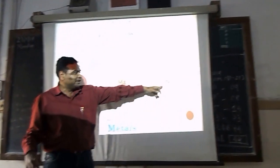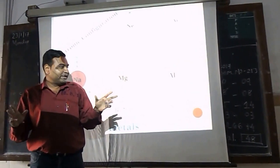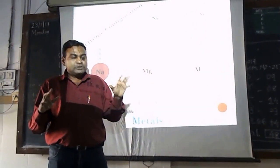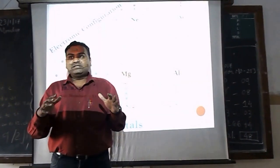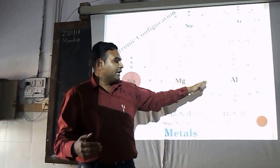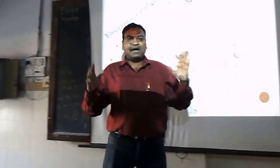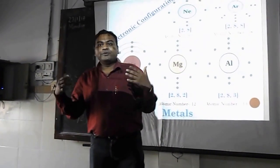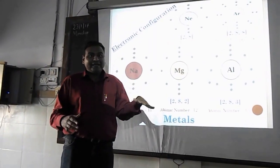A similar example applies to aluminium. Aluminium has atomic number 13 and electronic configuration 2-8-3, meaning it has 3 electrons in the outermost orbit. It would have to lose 3 or gain 5 electrons to become stable. Since gaining 5 electrons is not easy, it loses 3 electrons and converts into Al³⁺. So sodium, magnesium and aluminium all lose electrons and convert into positive ions, which is the characteristic of metallic elements.